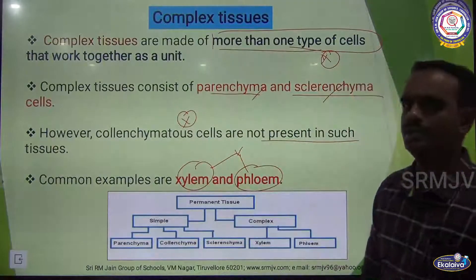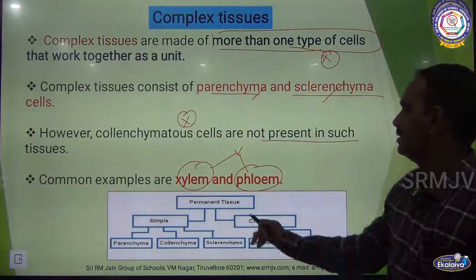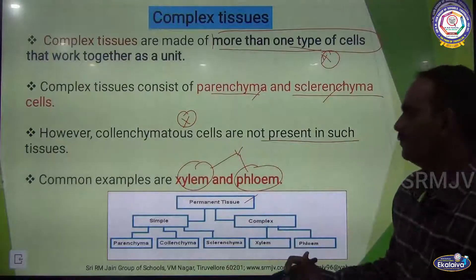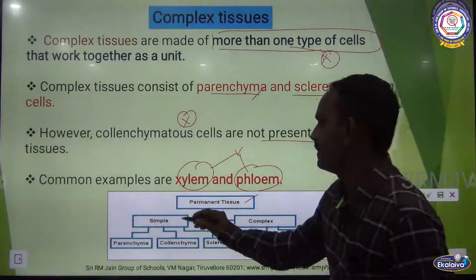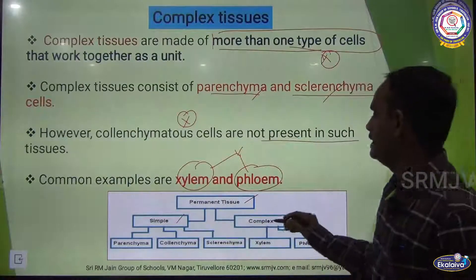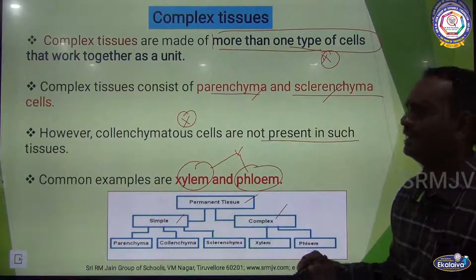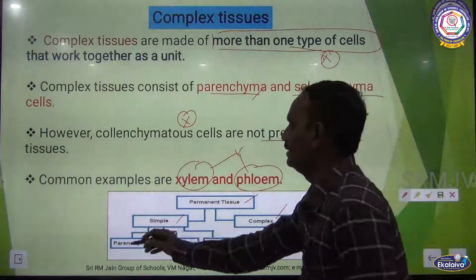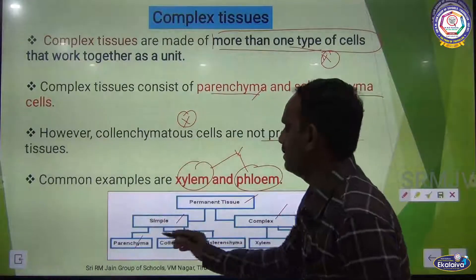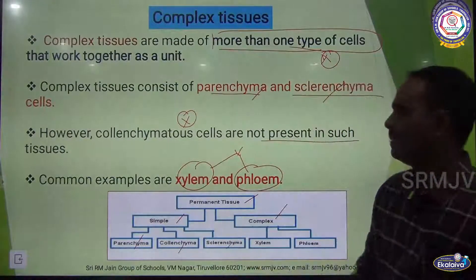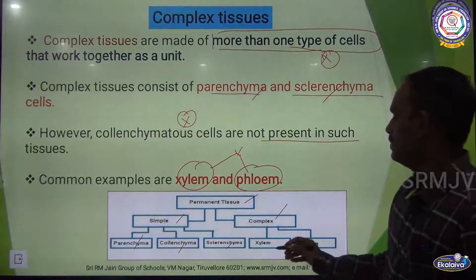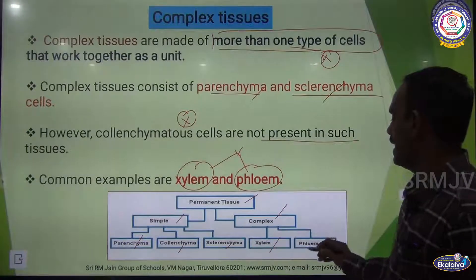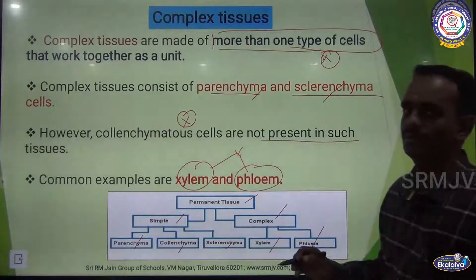See the flow chart here: permanent tissue is of two types — simple and complex. In simple, there are three types: parenchyma, collenchyma, and sclerenchyma. In complex, there are two types: xylem and phloem.